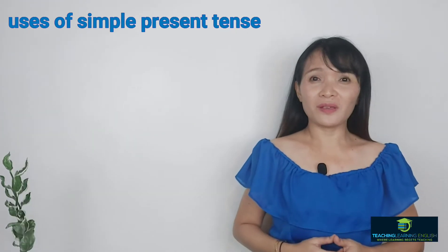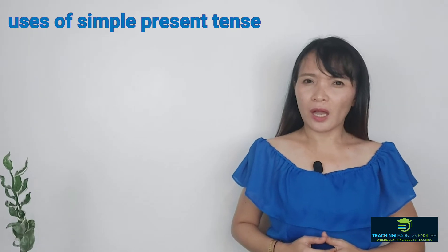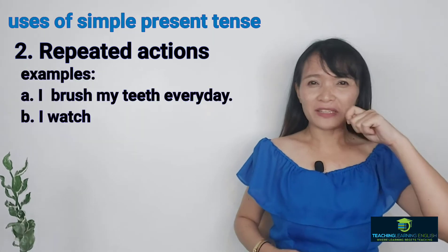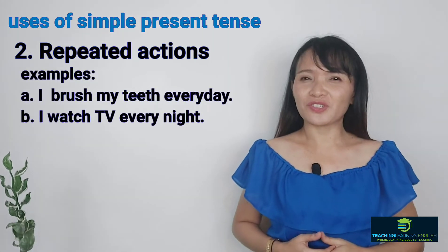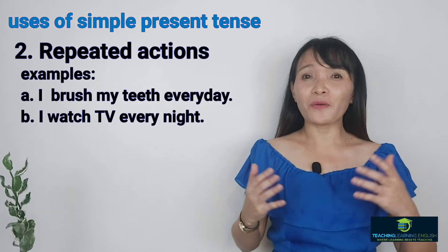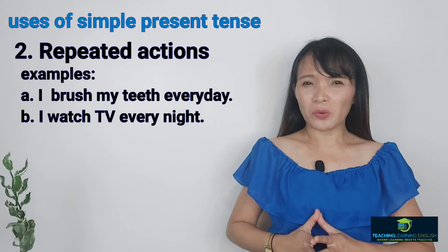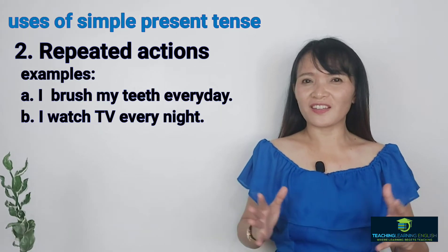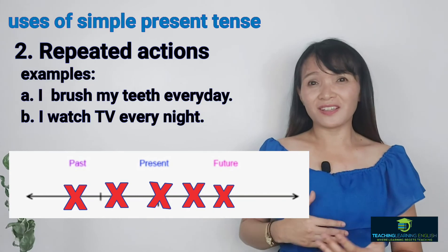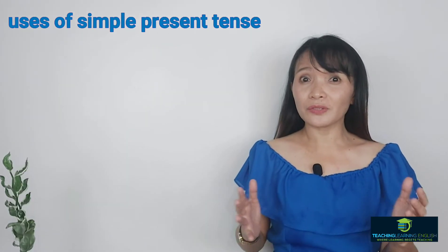The second is we use Simple Present Tense when something happens repeatedly, as these are habits or routines. You say I brush my teeth every day, I watch TV every day or every night. These are repeated actions. On the timeline for repeated actions, we put multiple events at regular intervals — it happens the same way as in general truth.